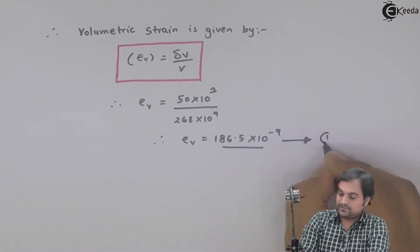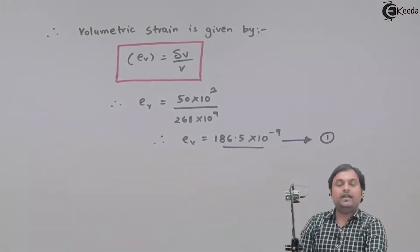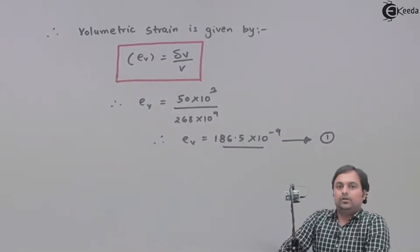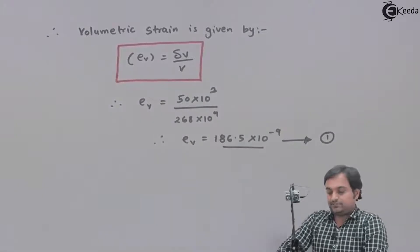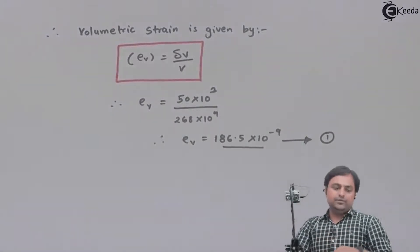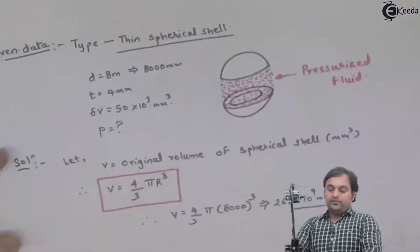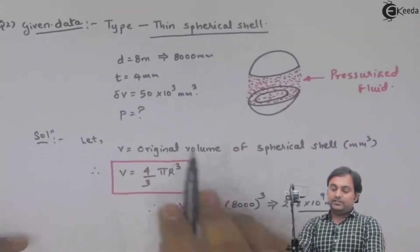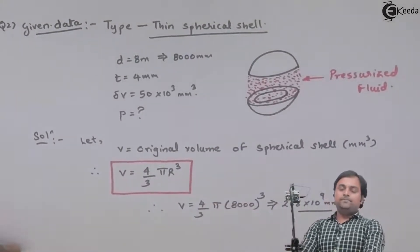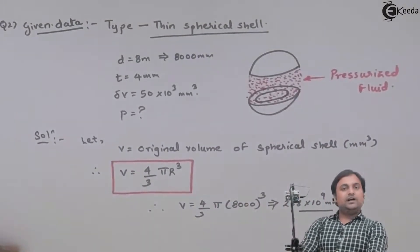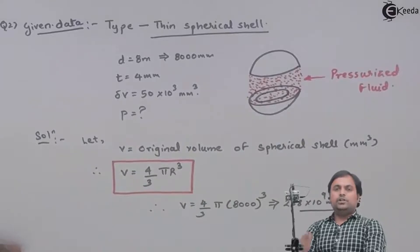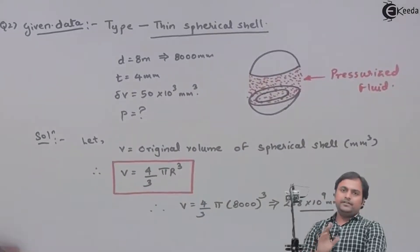This gives volumetric strain as 186.5×10⁻⁹. I will keep this as Equation 1. Now, to calculate the internal pressure of the pressurized fluid, I have the volumetric strain and will obtain another volumetric strain using the concept of circumferential strain.